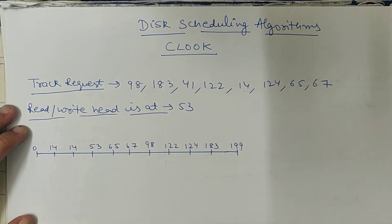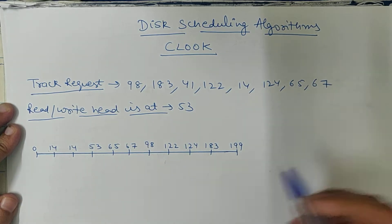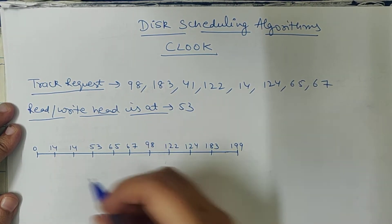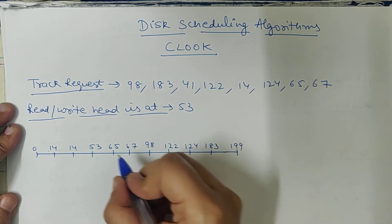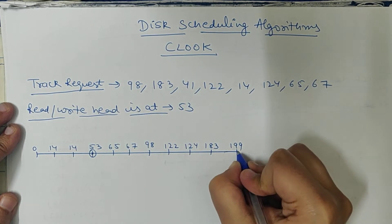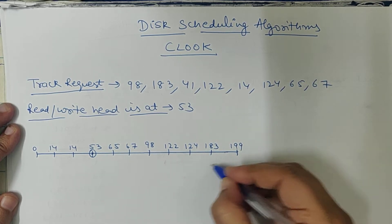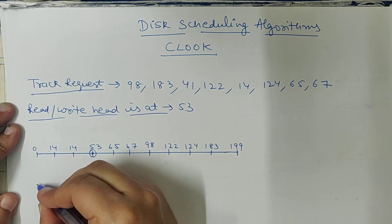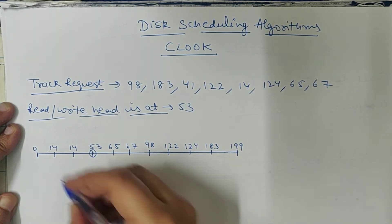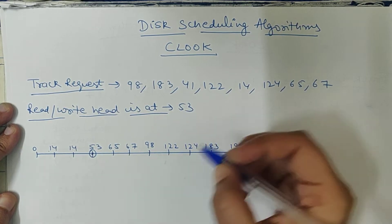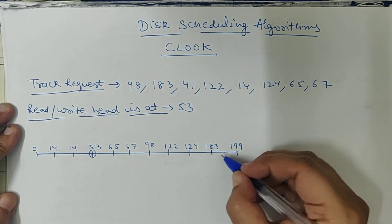Hello everyone, the next scheduling algorithm is CLOOK. Again, the question is same, so CLOOK and CSCAN are same. In CSCAN, what we did was wherever our current head is, from there we go to the end of the track, and then we don't go in reverse, we go to zero. After going to zero, we move in forward direction again and fulfill whatever requests are there.